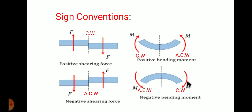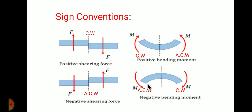If you are still not able to remember, you can use a layman method: if the vertical force is acting upward, whether it is on the left side or the right side, the beam will bend in sagging. If the vertical force is acting downward, whether on the right side or left side, the beam will bend in hogging or a dull face.